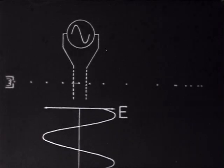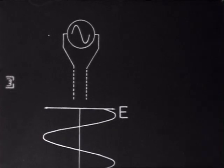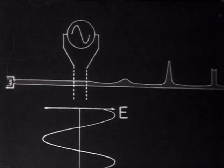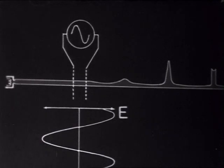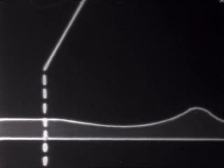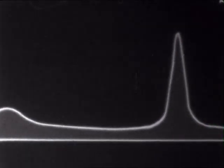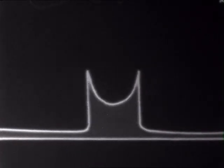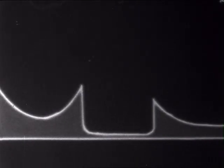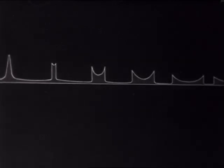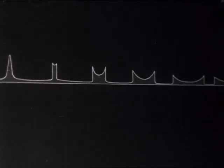At a certain time, the intensity variation of the beam follows this in appearance. At an increased distance, the electrons are dispersed again. This process is called velocity modulation of an electron beam.